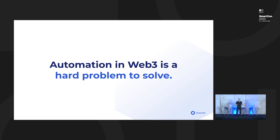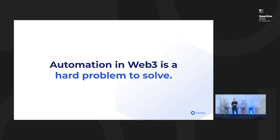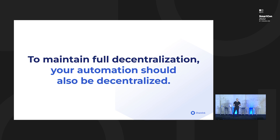It's actually a very, very difficult problem to solve. For any automation to occur, you need to check to see if some automation needs to happen or some transaction needs to occur, and then on the other side of that, you need to send the transaction. You need to account for things like chain reorgs, what gas price to use, and how to manage transactions — which again is a lot harder than it seems. If you need something to happen regularly, you're going to want to maintain decentralization across your entire stack, because you're really only as decentralized as the least decentralized part of your stack.